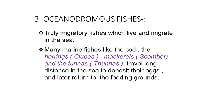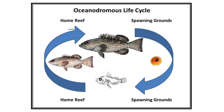Now, oceanodromous fishes are truly migratory fishes which live and migrate entirely in the sea. Many marine fishes like the cod, herrings, Clupea, mackerels, Scomber and the tunas travel long distances in the sea to deposit their eggs and later return to the feeding grounds. The life cycle diagram shows the home reef and spawning grounds, with these large fishes characterised by their pointed dorsal fins.